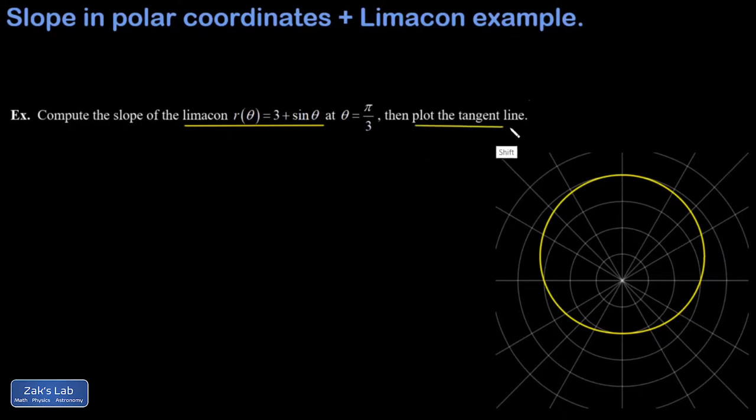Then we're going to plot the tangent line at that point, which means we need to find the actual point on the curve and plug into the point-slope formula. I'll start with a quick reminder of the conversion from polar coordinates into rectangular coordinates.